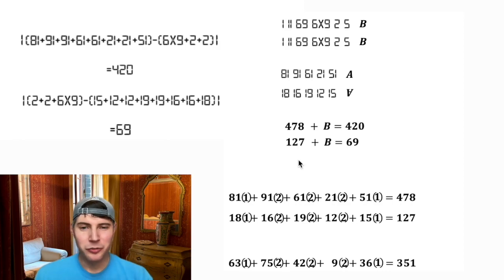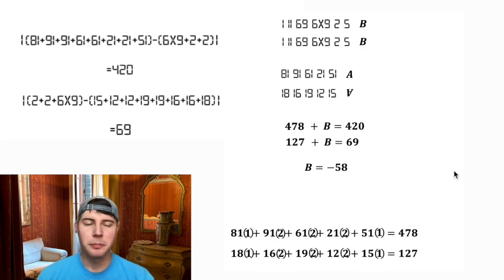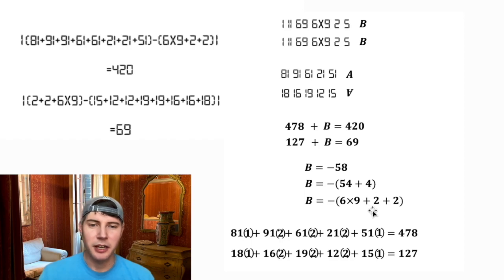Simple calculations. We can find out that B needs to be negative 58 for both of these equations. So I need to look at different combinations of 1, 11, 69, 6 times 9, 2, 5, anything that will give me 58. And I saw that 6 times 9 is 54, so I want to break this up into 54 plus 4, and then that could simply become 6 times 9 plus 2 plus 2. And that's what shows up up here. So that is what my B is.